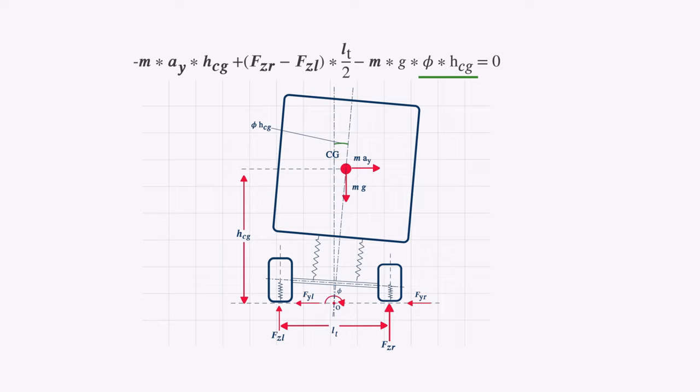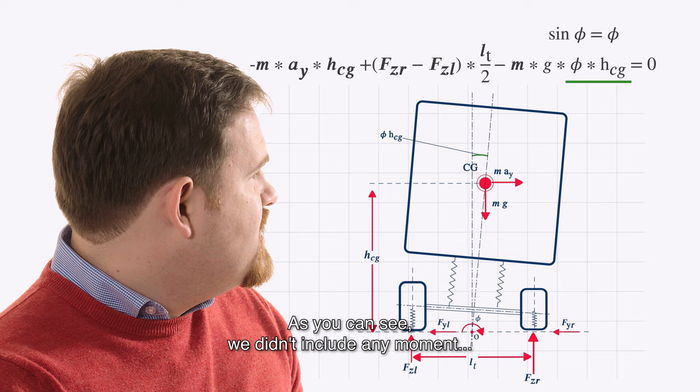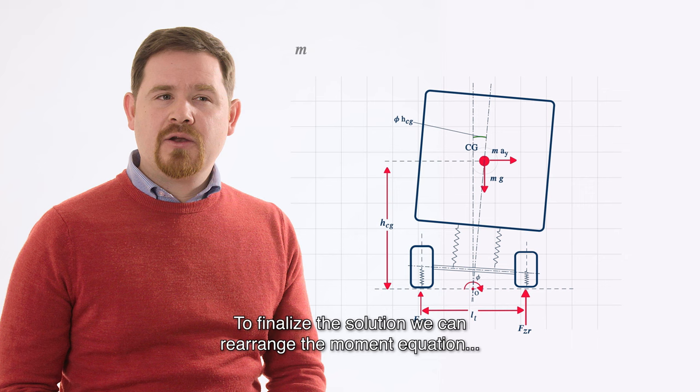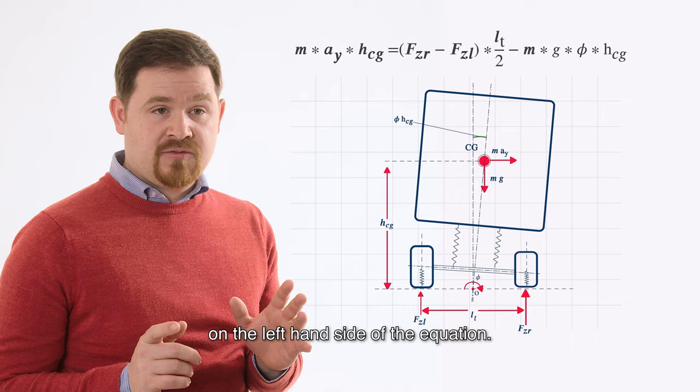Since we assume a relatively small angle, we can linearize it. As you can see, we did not include here any moment coming from the tire cornering forces. This is due to the moment arm which is equal to zero. To finalize the solution, we can rearrange the moment equation when separating the primary destabilizing moment on the left-hand side of the equation.